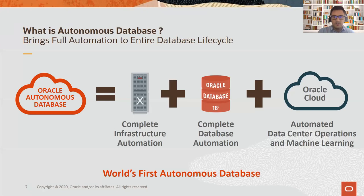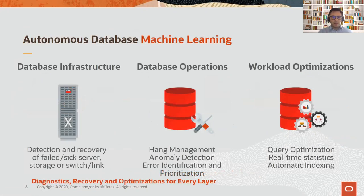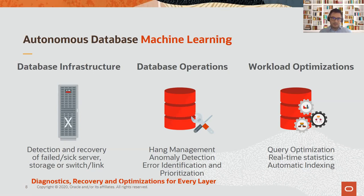Speaking of machine learning — what does it do for the database? Machine learning is part of everything. Starting from hardware: detection and recovery of failed disks or servers. On the software side: hang management, anomaly detection, error identification. And on workload optimization: collecting real-time statistics, monitoring how the database is used, what the frequent access methods are, and building automatic indexes.